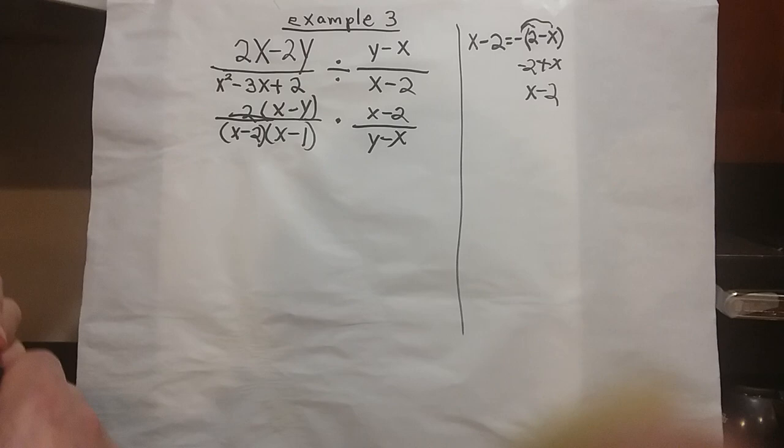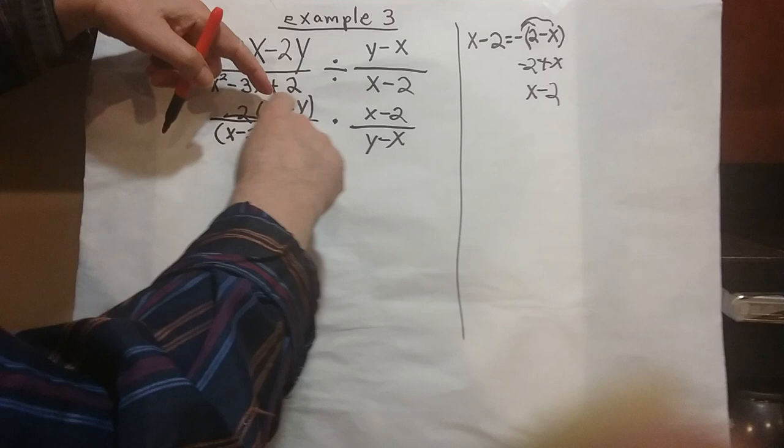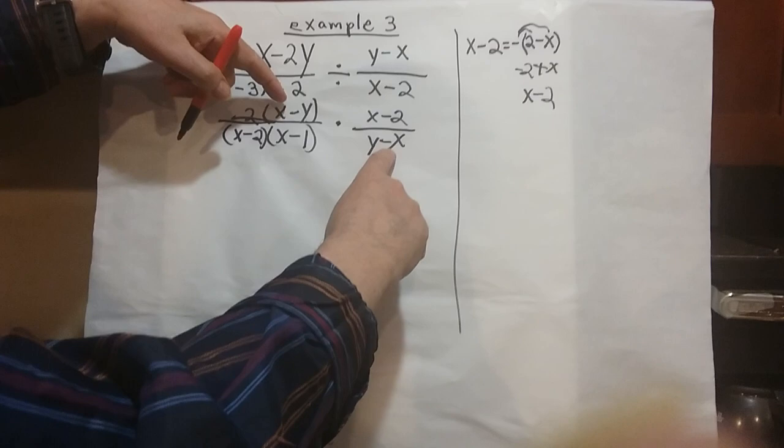Okay, now we're going to cross-cancel, just like we did before. Okay, now you see the reverse binomials here? If you look closely, x minus y and y minus x are reversed, so we want to make this one look like that.